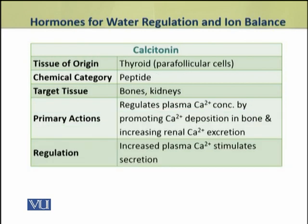The regulation of calcium ions is also very important for the body. For this purpose, the thyroid gland produces a hormone from its parafolicular cells called calcitonin. It is a peptide hormone and its function is to act on bones and kidneys to regulate the concentration of calcium ions in plasma. It promotes calcium ion deposition in bone and also increases its renal excretion. Increased plasma calcium ion concentration stimulates its secretion, and when released, it reduces calcium ion concentration in the blood.